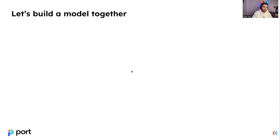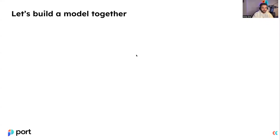Let's build our first model together — this is just an example, as you'll probably have a slightly different structure for your way of work. The first thing we'll answer is questions about services: who owns this microservice, where can I find the API docs for it, and so on. The first component will be the microservice component. We're going to create this entity and apply all the different properties that identify it, like the owner, the links to different documentation, the README, and so on.